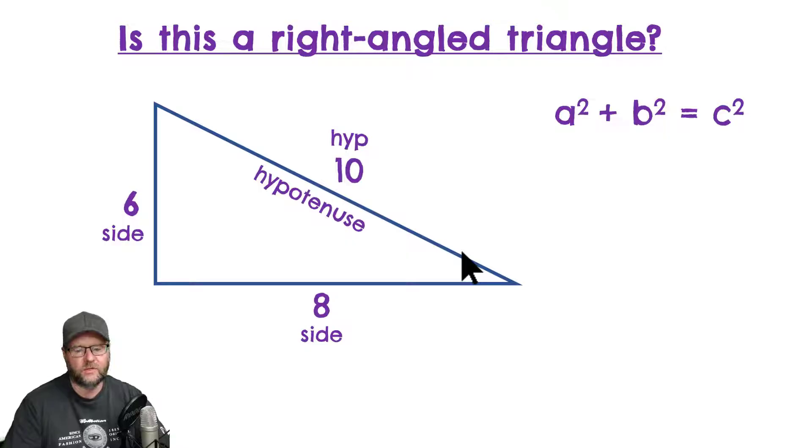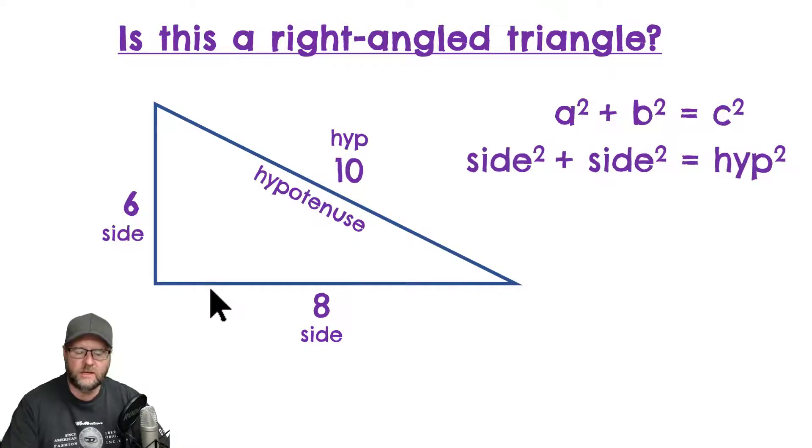You can check that out in the other video if you're not sure. But basically, what we did in that video was we took one side and squared it, we added it to this other side and squared it, and showed that it equaled this longest side, or the hypotenuse squared. So, let's put our numbers from this triangle into this formula.